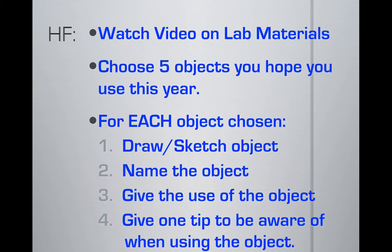Now that you've watched the video on lab materials, your home plan is to choose five objects that you hope to use this year. For each object - remember, you have to choose five objects - you need to do four different things. First, choose an object. You need to draw or sketch the object, name the object, and third, give the use of the object. The last thing - you might need to do a little research online if you don't know it off the top of your head - number four says you must give one tip to be aware of when using the object.